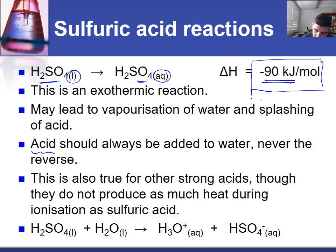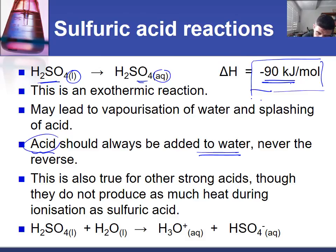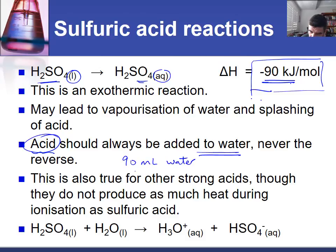The important thing is that the acid should always be added to the water, not the other way around. If you pour a little bit of water onto very concentrated acid, the intense production of heat can cause the water and acid to spit and fly around, which is very potentially dangerous. So if you wanted to dilute acid by tenfold — say, add 10 mL to 90 mL of water — you would prepare the water first and then add the 10 mL of acid to the water, so it becomes very dilute and then increases in concentration gradually.